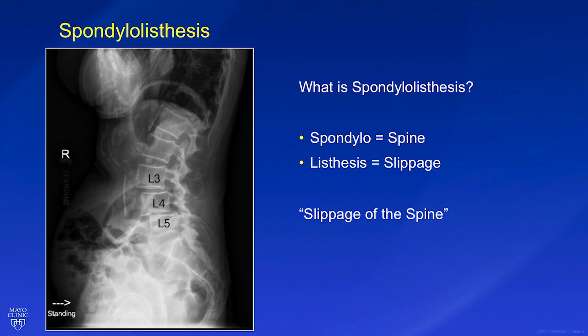Recall from previous health or anatomy classes that the spine is made up from different bones called vertebrae. The seven ones in your neck are called cervical, the 12 ones in your chest are called thoracic, and the five vertebrae at the bottom of your spine are called lumbar. While spondylolisthesis can occur anywhere in the spine, we will focus our discussion on spondylolisthesis occurring in the lower section of the spine, known as the lumbar spine.